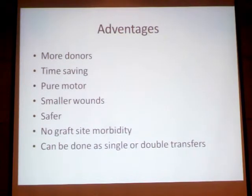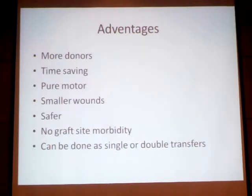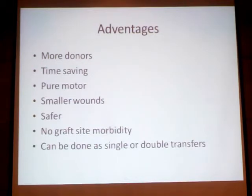The advantages of nerve transfer: I have more donor nerve fibers than I need. There is time-saving for regeneration. If I use a nerve transfer, I can go directly from a motor branch to a muscle — motor branch to motor branch. I don't have mixed nerve issues or sensory-to-motor mismatches, so the result is not compromised.